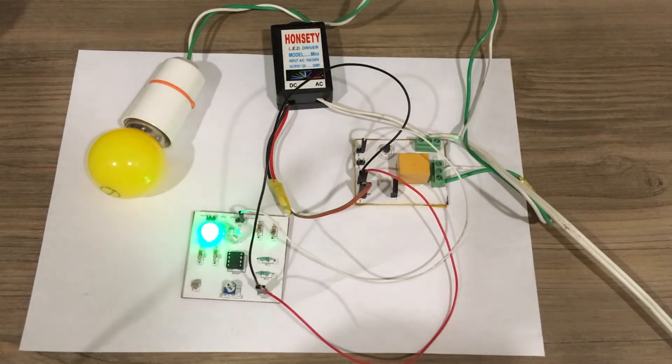This is how you can use it in the outdoors very easily. So that is automated light using the light intensity sensor quite easily done. Please write to us in the comment section below for any queries or any feedback that you might have. We would love to hear from you. Thank you very much.